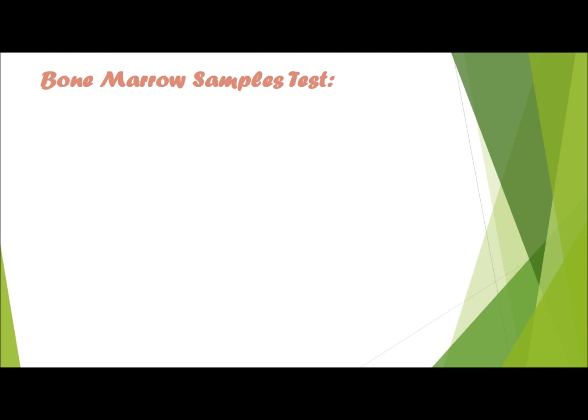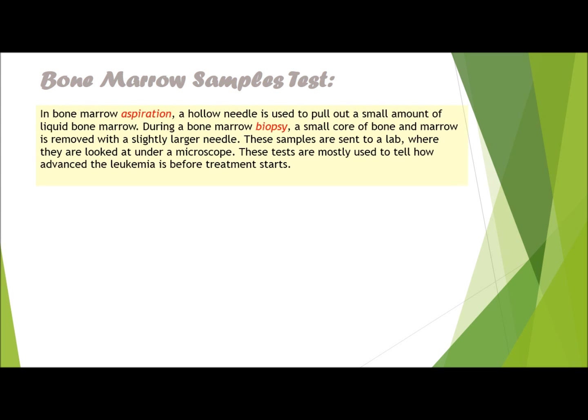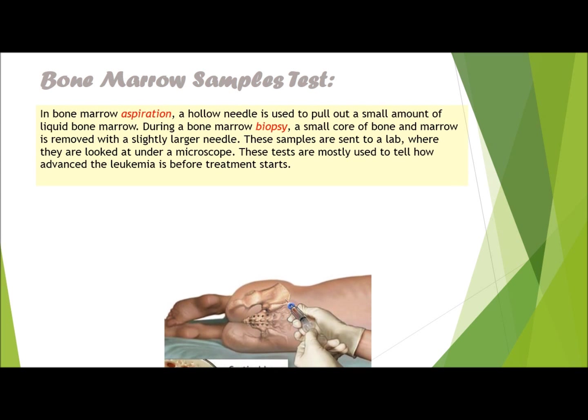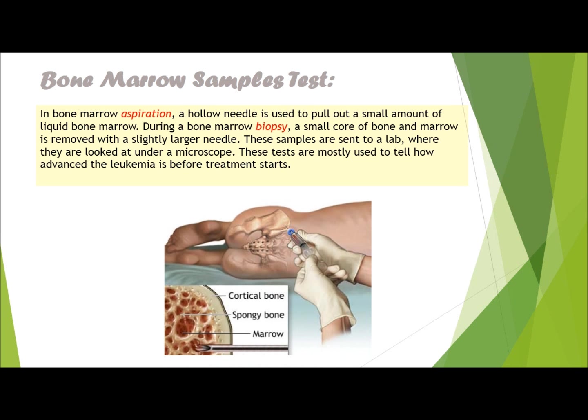Diagnosis: Bone marrow samples test. In bone marrow aspiration, a hollow needle is used to pull out a small amount of liquid bone marrow. During a bone marrow biopsy, a small core of bone and marrow is removed with a slightly larger needle. These samples are sent to a lab where they are looked at under a microscope. These tests are mostly used to tell how advanced leukemia is before treatment starts.